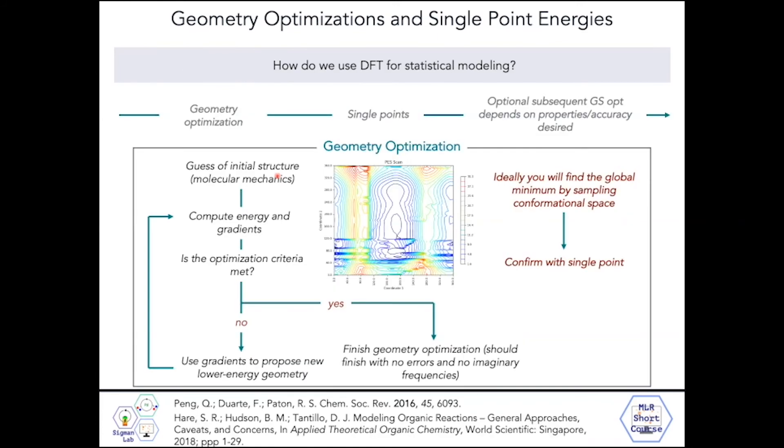What's the difference between a single point and a geometry-optimized structure, and why would you need to confirm specifically with a single point that you've found the global minimum? Within geometry optimization, you're performing a number of single points, because what a single point is, is it takes the geometry that you have and then computes the energy of those coordinates. When we're confirming with a single point, the low-energy structure that we find after the geometry optimization at that lower level of theory might not actually be the true minimum, so we really want to use a more accurate method to confirm the relative energies.